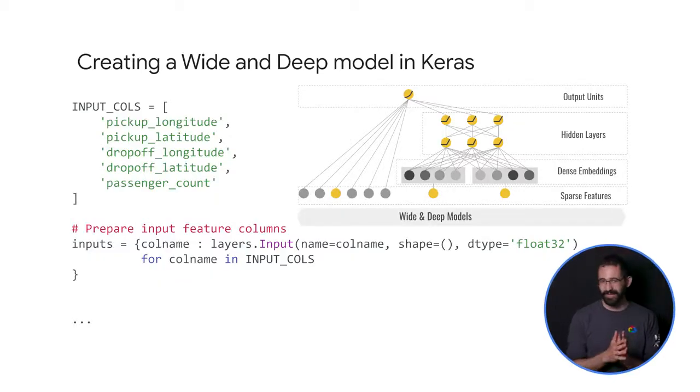Okay, now for the fun part, how do you actually create one of these wide and deep models? So we're going to start by setting up the input layer for the model using the features of the model data. For this example, we'll be using the pickup and drop off latitude and longitude, as well as the number of passengers to try to predict the taxi cab fare for a given ride.